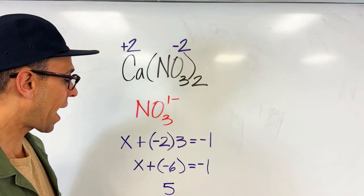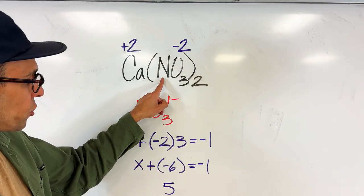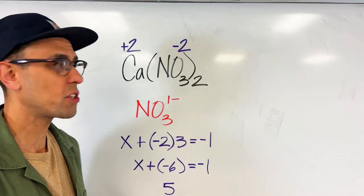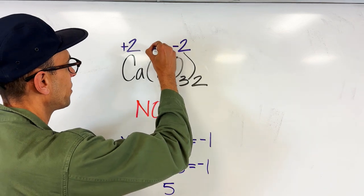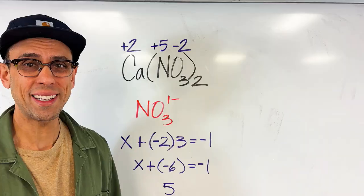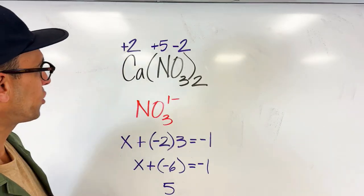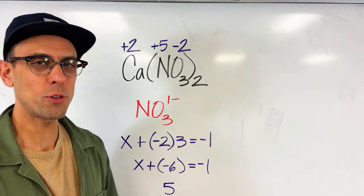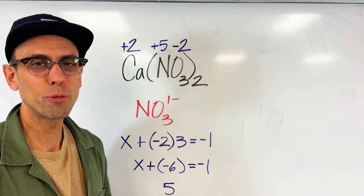That's right, the answer is going to be five. So it turns out that the oxidation number of this nitrogen based on the rule that we just used is positive five. So now we have our oxidation numbers for all of the elements in calcium nitrate: positive two for calcium, positive five for nitrogen, and negative two for the oxygen.